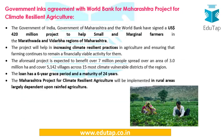Our next news is about an agreement with the World Bank for a Maharashtra project for climate-resilient agriculture. The government is giving a lot of push to climate-resilient agriculture, along with organic farming and zero-budget natural farming. The Government of Maharashtra and the World Bank have signed a project worth $420 million to help small and marginal farmers. The loan will have a grace period of six years and a maturity of 24 years.